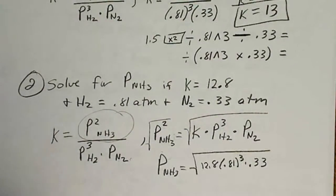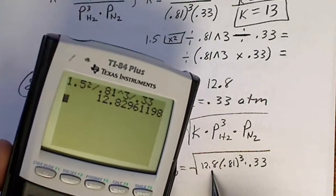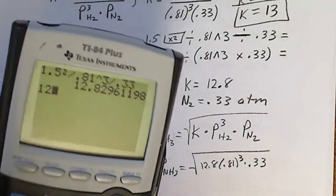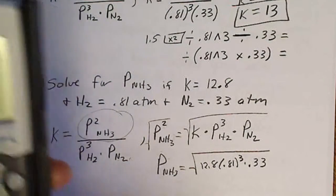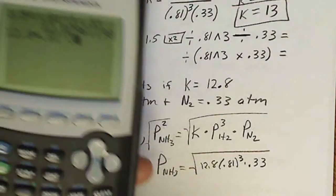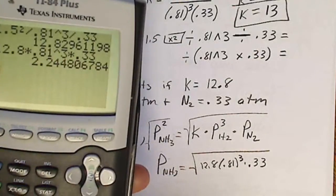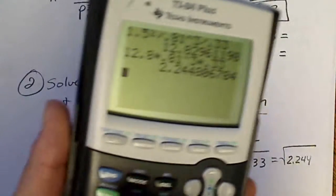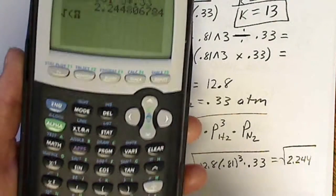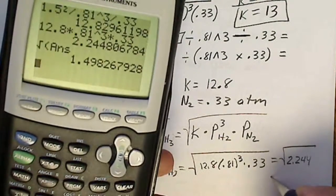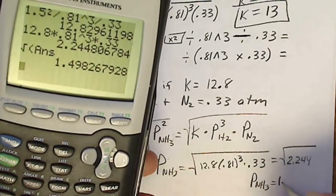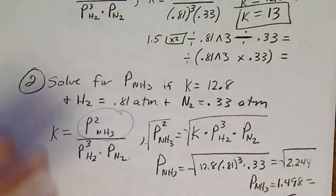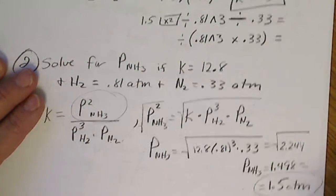So we have to undo a square by taking the square root. And I've actually got this entire number in my calculator. I'm going to go ahead and, let's just say we were given the 12.8. And we multiply that by 0.81 and raise that to the third power and multiply that by 0.33. And what's under the square root sign is 2.244. So I'm going to hit the second square root and then hit the second answer key so I don't have to plug all that back in. And when I do that, I get the pressure of NH3 equals 1.498 and so on. This rounds to 1.5. That would be atmospheres. And that is the value that we were given up here initially.